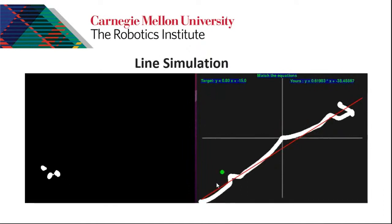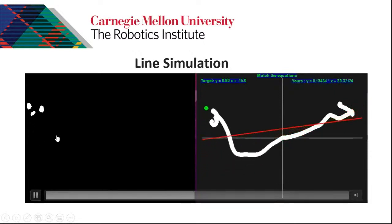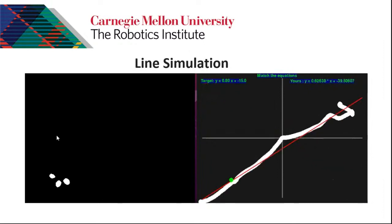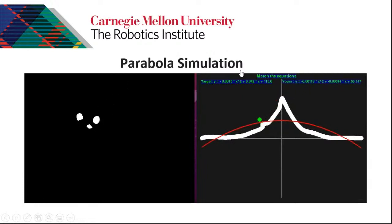This is the line simulation. The user puts their hand with three fingertips. When they close their hand, they can move and interact with the function. The fitted equation is shown on the right, and the target equation is at the left top. When they match with 5% error, they go to the next stage.